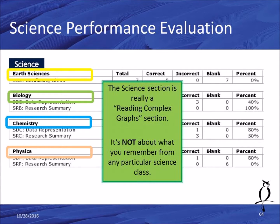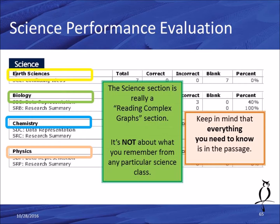A lot of people think: I'm great in science classes, so I should take the ACT because it has science — that's a strength for me. But ACT science isn't about science you remember from physics, biology, or chemistry class. It's about reading complex graphs. If you're good at reading complex graphs and interpreting data, this section will be easy. If you aren't good at paying attention to detail and reading complex graphs, it'll be difficult. Just like reading comp, everything you need to know is in the passage — no physics or chemistry formulas needed.